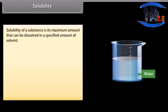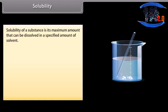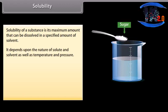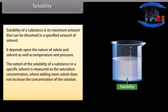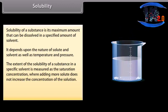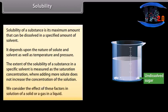Solubility of a substance is its maximum amount that can be dissolved in a specific amount of solvent. It depends upon the nature of solute and solvent, as well as temperature and pressure. The extent of solubility is measured as the saturation concentration, where adding more solute does not increase the concentration of the solution. We consider the effect of these factors in solutions of a solid or a gas in a liquid.